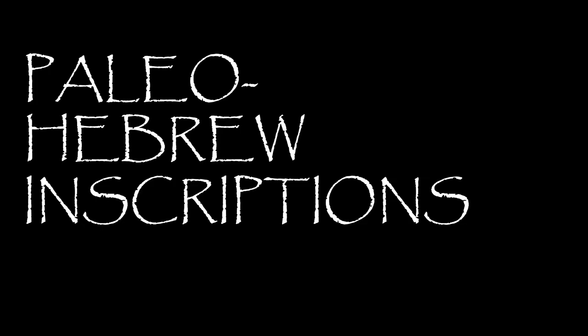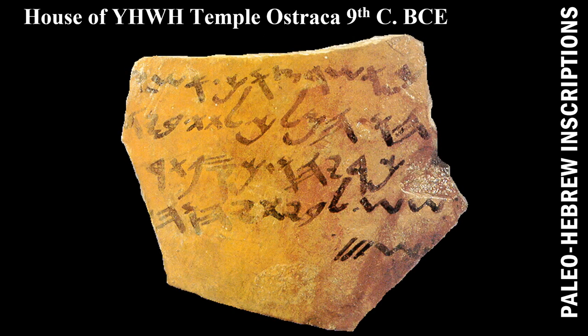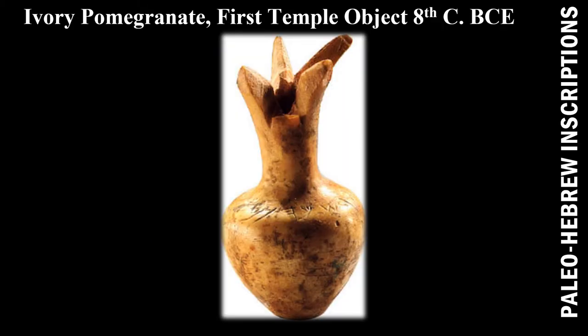Now let's look at some Paleo-Hebrew inscriptions. You can tell the script is different from the Proto-Sinaitic. The Gezer Calendar dates to the 10th century BC. The House of Yahweh Temple Ostraka dates to the 9th century BC — though uncertain if it's a forgery as it was found in a private collection — but on the fourth line on the left corner it says 'Beit Yahweh,' House of Yahweh. There is also an ivory pomegranate, a first temple object from the 8th century BC, which may have actually resided in the temple.